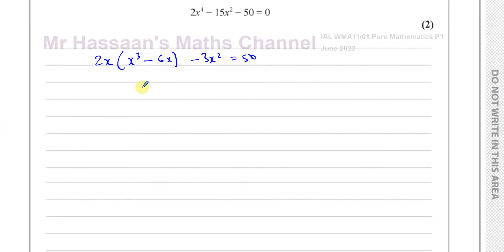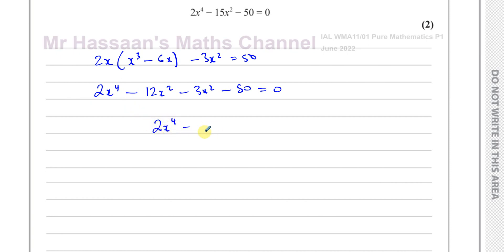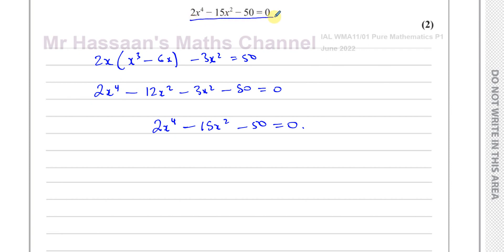Expanding gives 2x to the power of 4 minus 12x squared. Then minus 3x squared, and subtracting 50 from both sides gives equals 0. So 2x to the power of 4 minus 12x squared minus 3x squared is negative 15x squared, minus 50 equals 0 — which is what was required to show. That answers part A of the question.